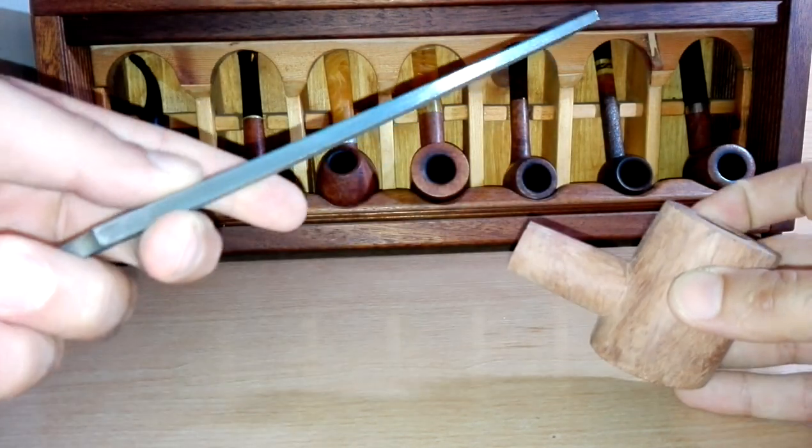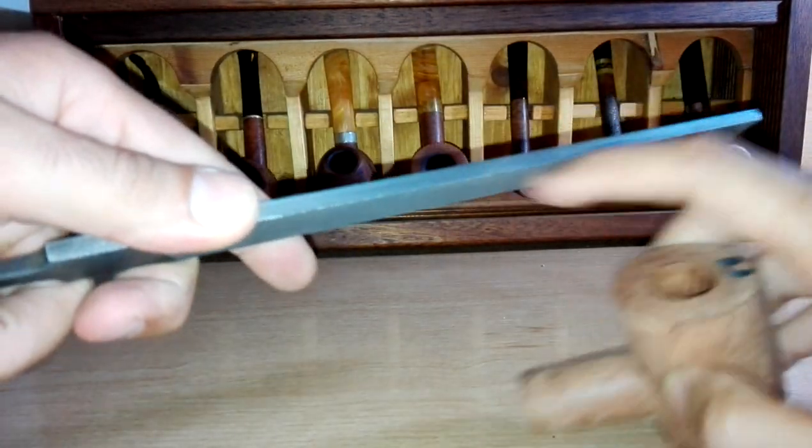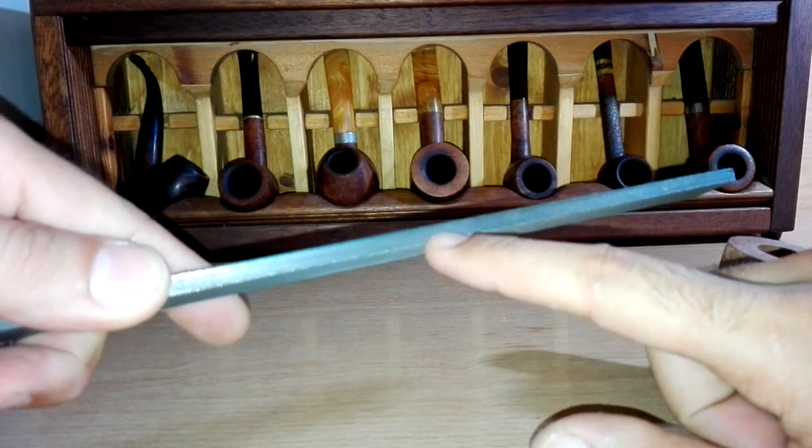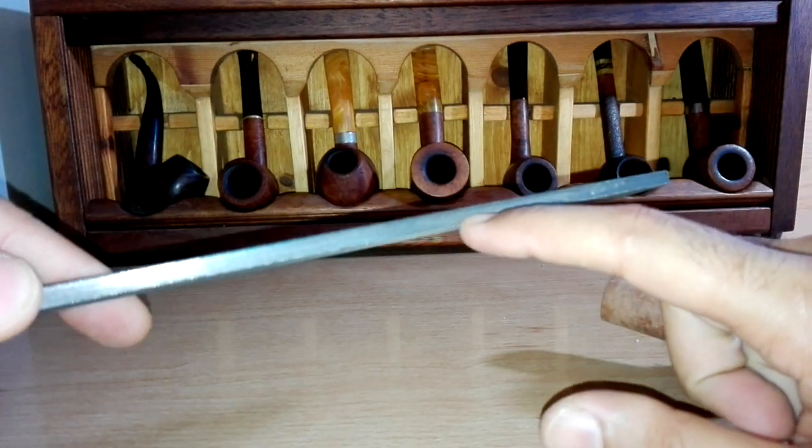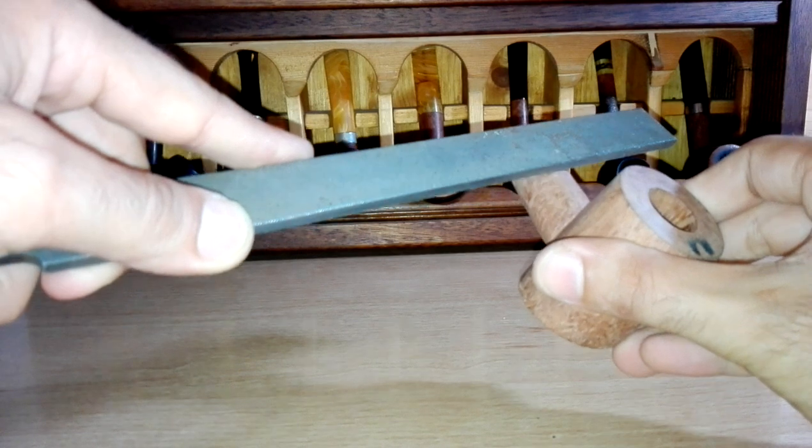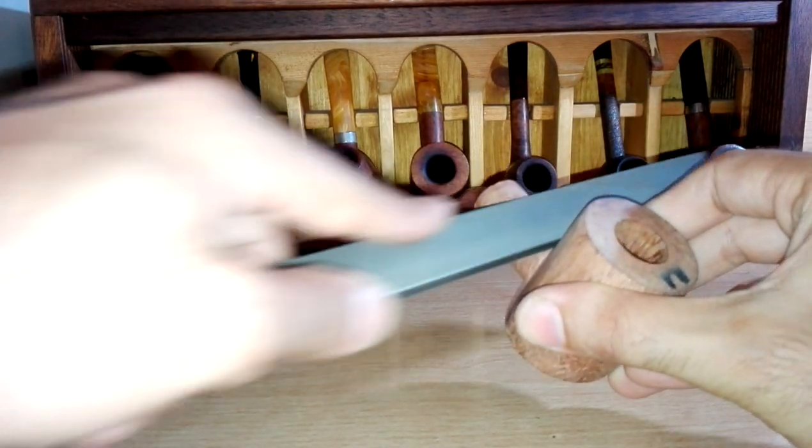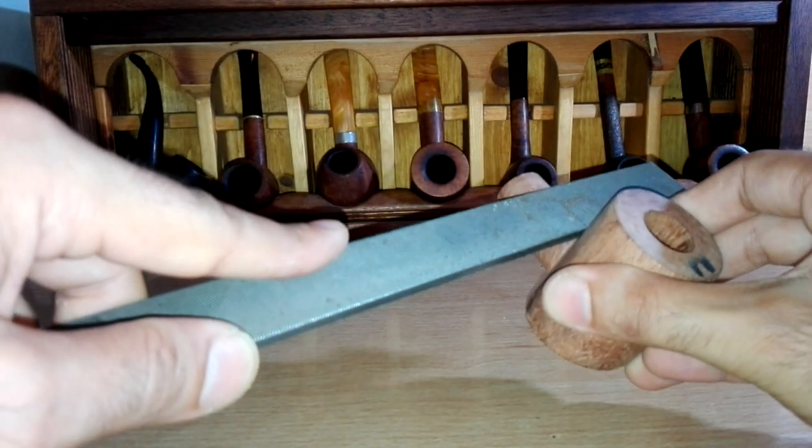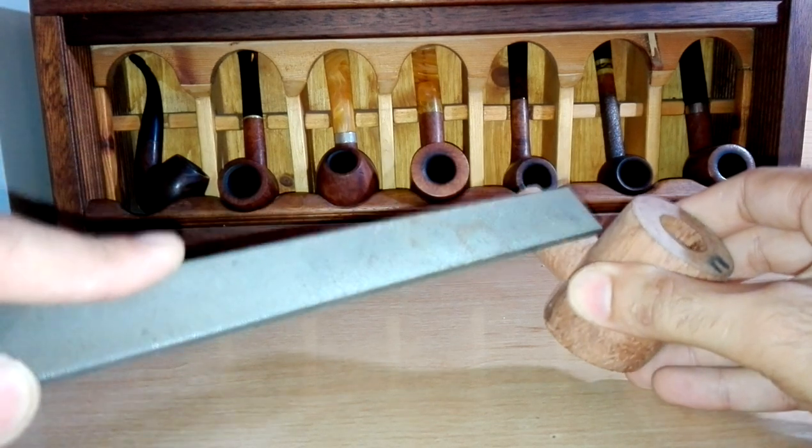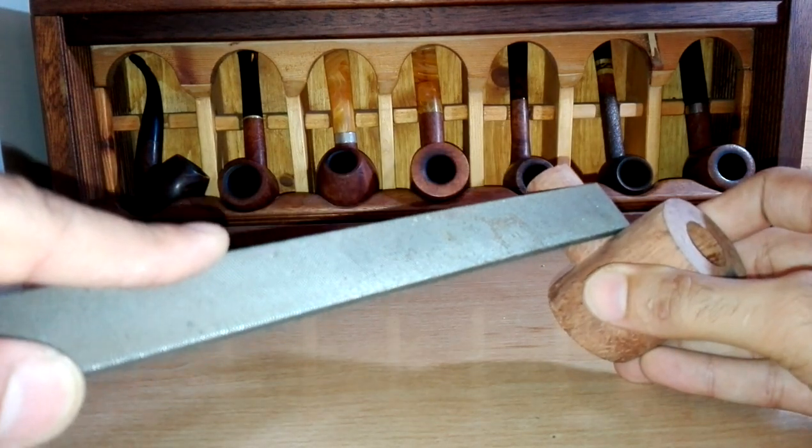So we have to use this level side, this plain side, touching the bowl this way and we rub it off that way. In this way we will only take excess material out of the shank, not from the bowl.